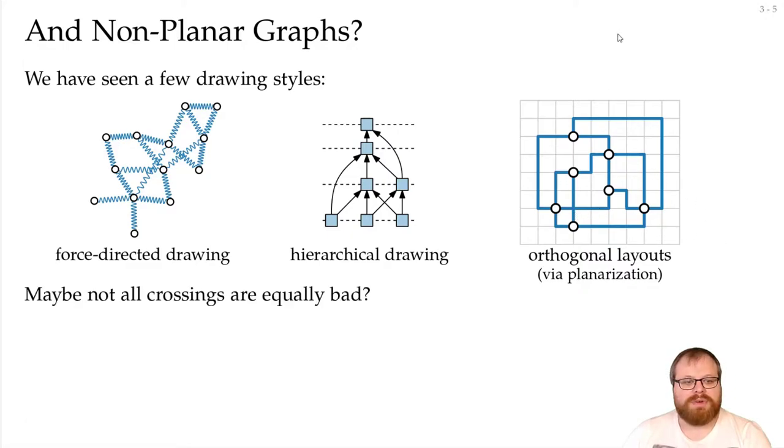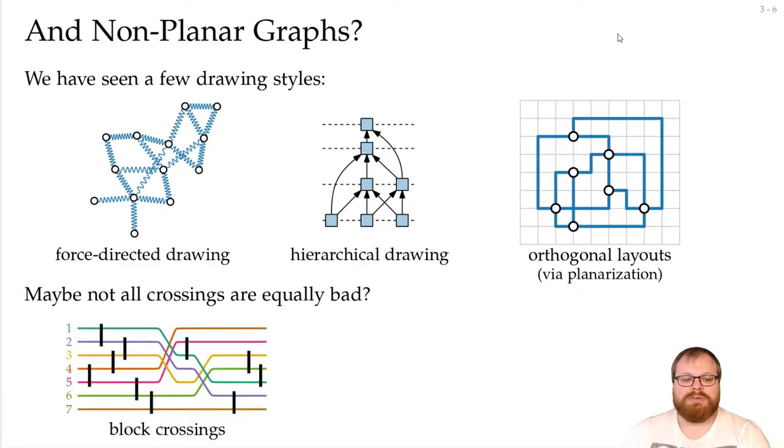In general however, not all crossings are equally bad. We had this example here earlier where we talked about block crossings. Here we have six crossings, but we don't mind those six too much because they are very close to each other and basically they form a bipartite graph. So here we have one block crossing and another block crossing. And while this is ten crossings, we only see two clusters of crossings.